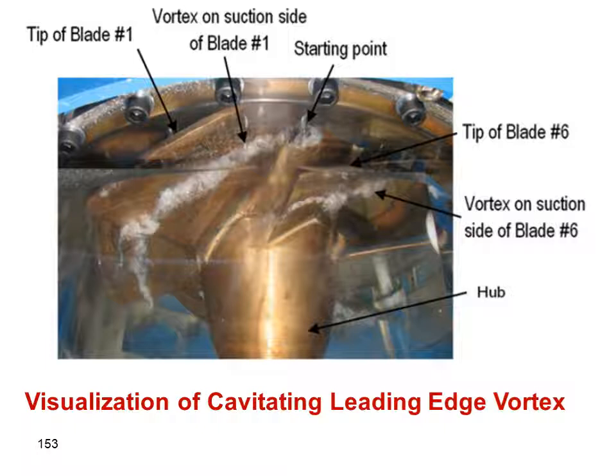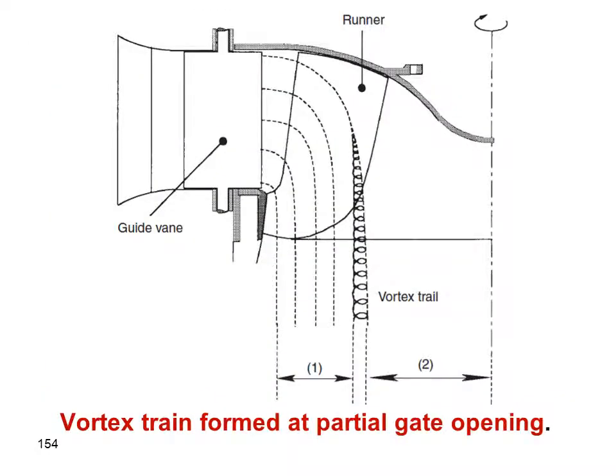Here is a visualization of an axial flow turbine runner showing cavitation or vapor formation inside the gap between the blades — appearing as white ropes of vapor.